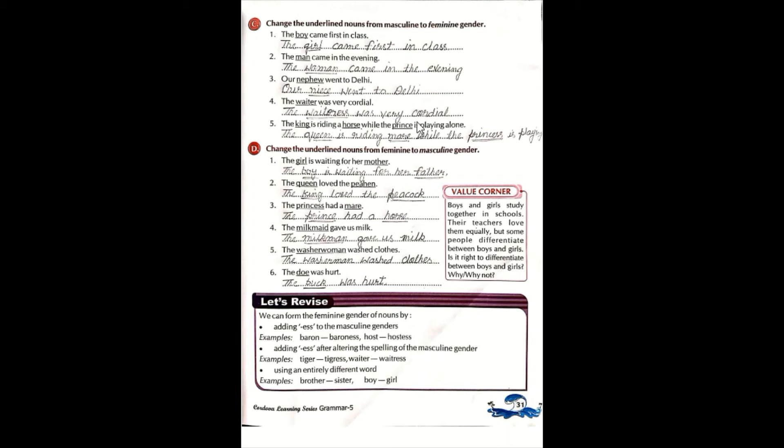The waiter was very cordial becomes the waitress was very cordial. Fifth sentence: the king is riding a horse while the prince is playing alone. In this sentence there are three masculine gender nouns: king, horse, and prince. King converts to queen, horse converts to mare, prince converts to princess. So the queen is riding a mare while the princess is playing.